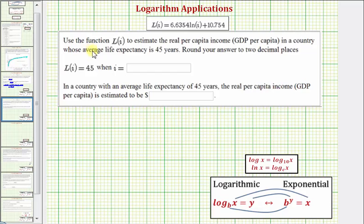Our next question: we want to use the function L(I) to estimate the real per capita income, or GDP per capita, in a country whose life expectancy is 45 years of age. Again, we're asked to round to two decimal places. So now we're given L(I) equals 45, we want to find the value of I. So we'll substitute 45 for L(I).